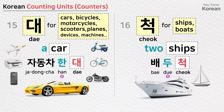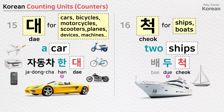대 is used to count cars, bicycles, vehicles, motorcycles, scooters, airplanes, printers, cell phones, devices, machines, and more: a car — 자동차 한 대. 척 is used to count ships or boats: two ships — 배 두 척.